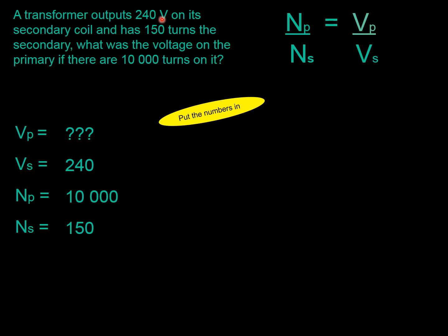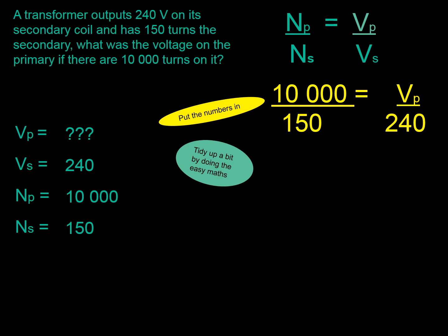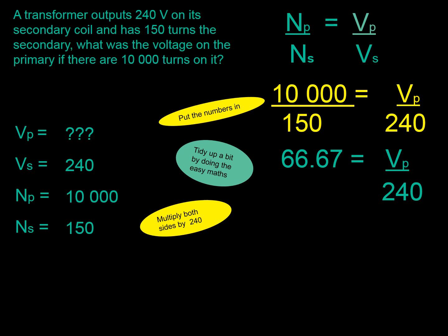That is the hardest bit, really. It's just working out what everything in. There we go, though. Put the numbers in the same way. NP. 10,000. NS. 150. VP, we don't know. VP. The S, 240. All the numbers in. Tidy up. Multiply through. Finally, do your calculation.